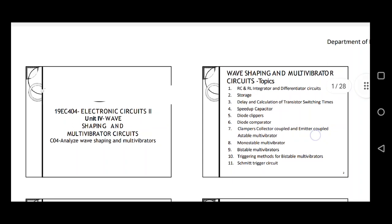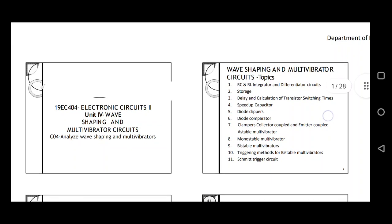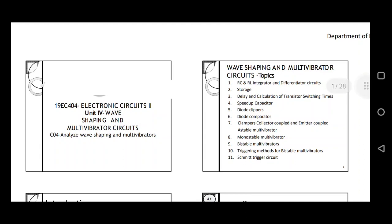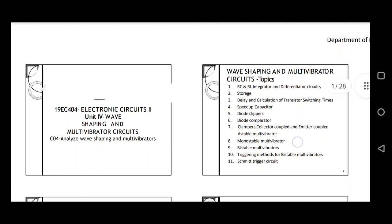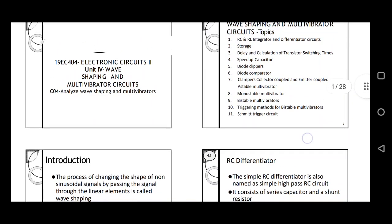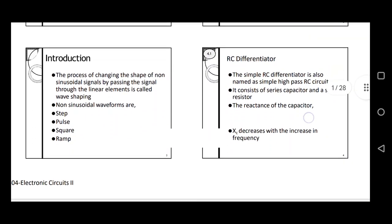The first topic is RC and RL Integrator and Differentiator Circuits. Then Storage, Delay and Calculation of Transistor Switching Times, Speed Up Capacitor, Diode Clippers, Diode Comparator, Clampers, Collector Coupled and Emitter Coupled Astable Multi Vibrator, Mono Stable Multi Vibrator, Bi-Stable Multi Vibrators, Triggering Methods for Bi-Stable Multi Vibrators, and finally Schmitt Trigger Circuit. In this video, we are going to discuss the topic on RC Differentiator and RC Integrator.